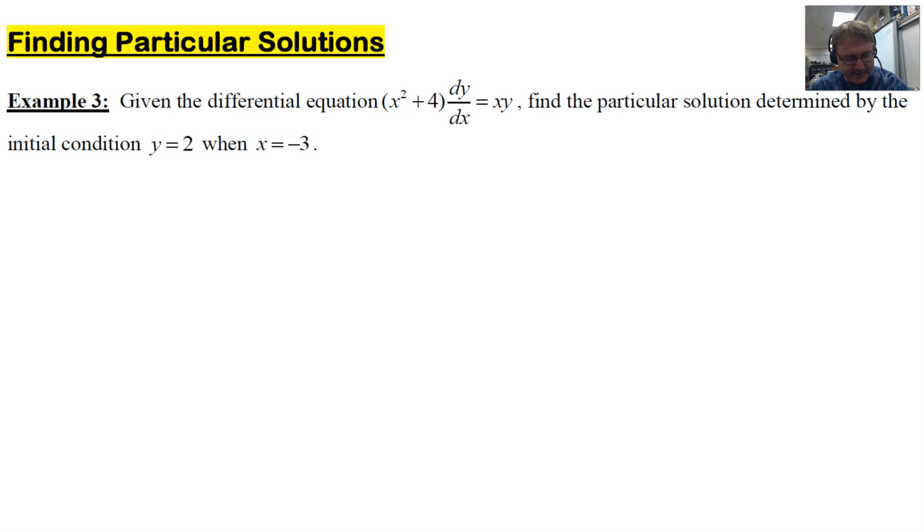The one thing about these types of solutions versus the general solutions is that they begin very similarly. You have to separate variables. We're going to get the dy and the y's on the left, the dx and x's on the right side. So to pull that off, I think we have to do three things: divide y over from the right to the left, divide x² + 4 over to the right, and multiply the dx over to the right.